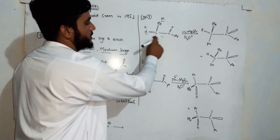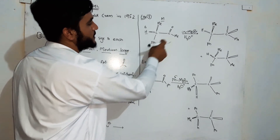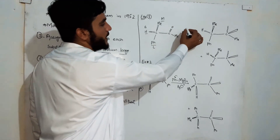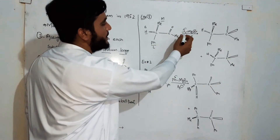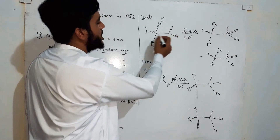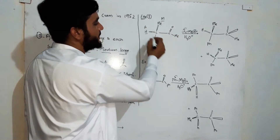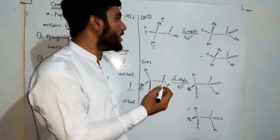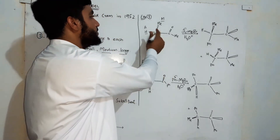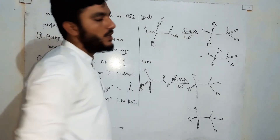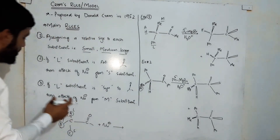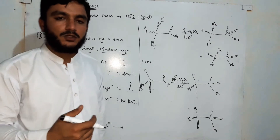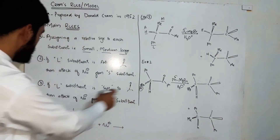When the larger substituent is anti to the carbonyl group, addition of the nucleophile — in this case a methyl group — will occur according to the smaller substituent. If the smaller substituent is below the plane, addition of CH3 will be below the plane; if above the plane, addition will be above the plane.